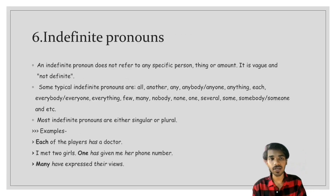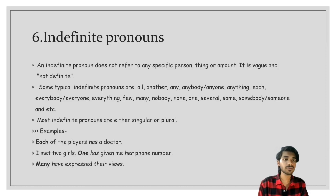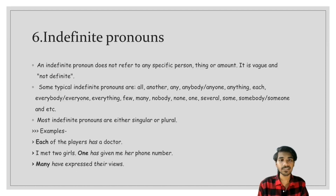The sixth type is indefinite pronoun. An indefinite pronoun does not refer to any specific person, thing, or amount — it is vague and not definite. Some typical indefinite pronouns are all, another, any, anybody, anyone, anything, each, everybody, and so on. Most indefinite pronouns are either singular or plural. Examples: 'Each of the players has a doctor' — 'each' is indefinite. 'I met two girls; one has given me her phone number.' 'Many have expressed their views' — 'many' and 'one' are indefinite pronouns.